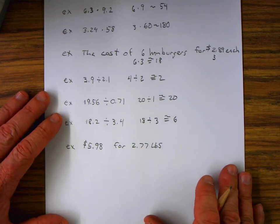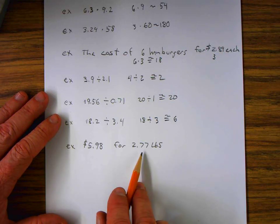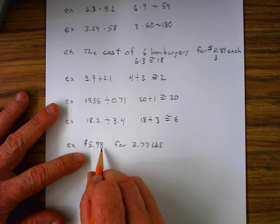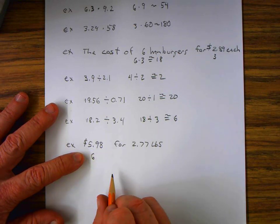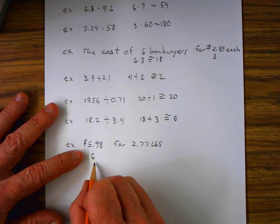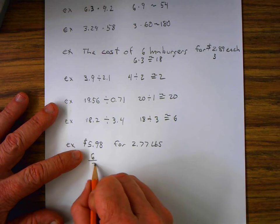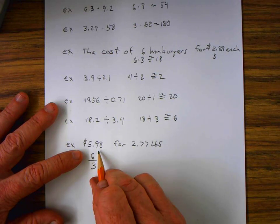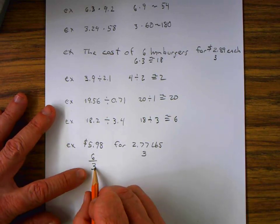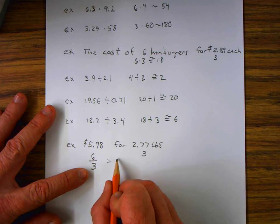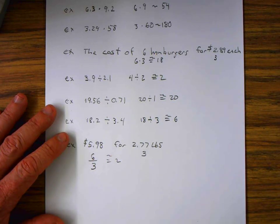On our last problem, we're paying $5.98 for 2.77 pounds. So let's round this $5.98 to $6, because that 9 is greater than 5. And this is for 2.77 pounds, we can round that up to 3. So $6 for 3 pounds. So it's about 6 divided by 3 equals 2, approximately. So that's about $2 per pound. And that's it.